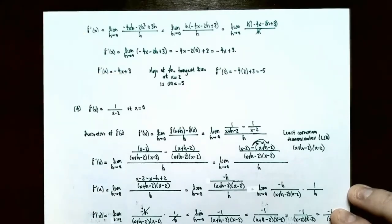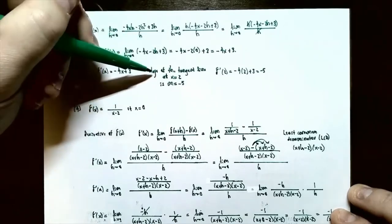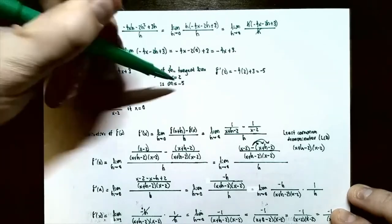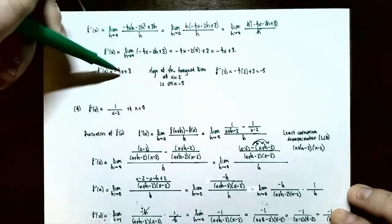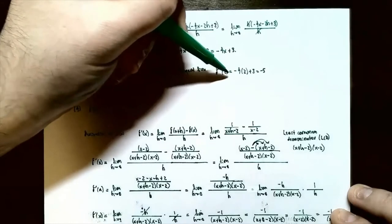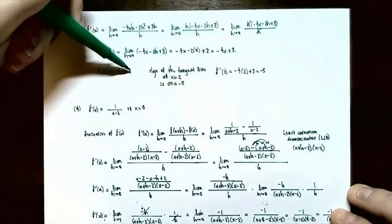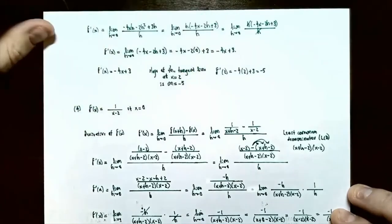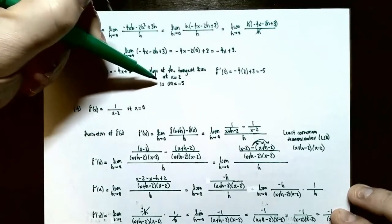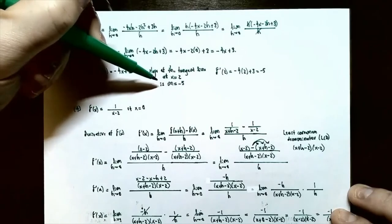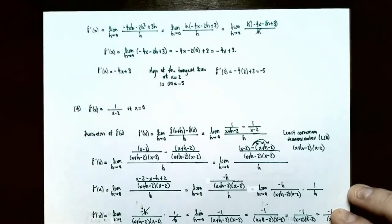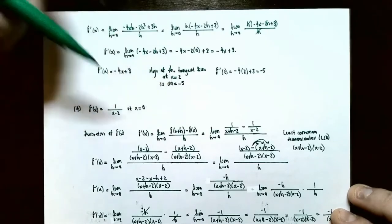This is the first example where we can actually plug in the x value to find the slope of the tangent line. We want the slope at x equals 2, so plug 2 into the derivative: f prime of 2 equals negative 4 times 2 plus 3, which equals negative 5. That's the slope of the tangent line at x equals 2 — if you drew a tangent line at that point, its slope would be negative 5.